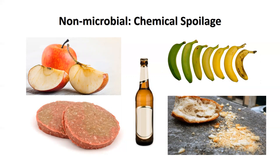Banana ripening is caused by ethylene, a gas naturally produced by the banana and other types of climacteric fruits. This can often lead to over-ripening to a point where one might consider that banana to be spoiled.